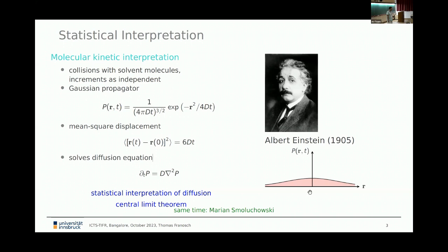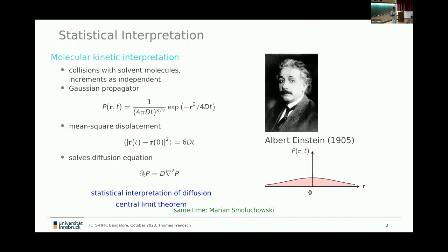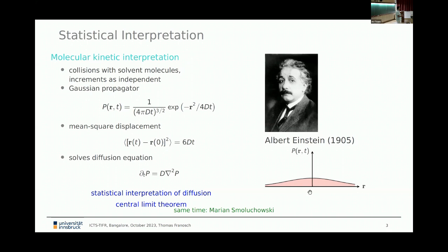Einstein was not the first to observe that this propagator solves the diffusion equation — you can see in the animation how this Gaussian broadens with time. The new thing is that rather than talking about concentration, he attributed this to a probability density, giving a statistical interpretation of diffusion. And you wonder, was Einstein really the first? It turns out that at the same time, Marian Smoluchowski — a knight in the Austro-Hungarian Empire — had very similar ideas to Einstein. But he did not dare to publish his work because he had no experiment to prove his ideas. So Einstein published without experiment, and only then Smoluchowski decided he could do the same.